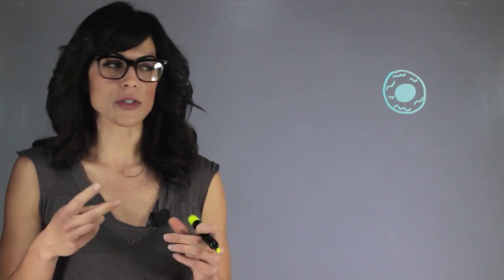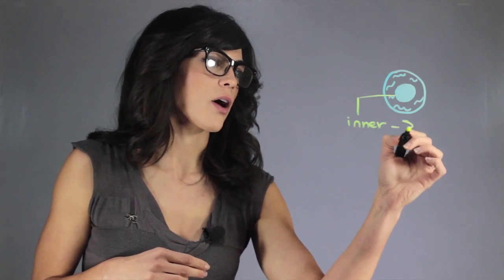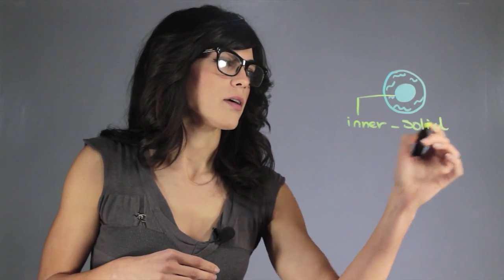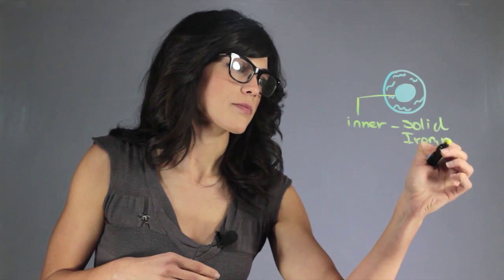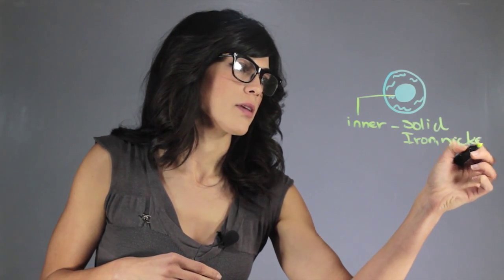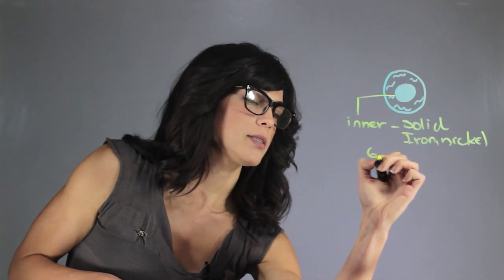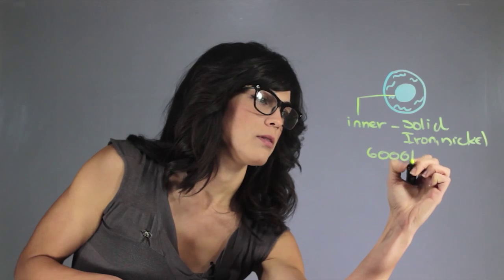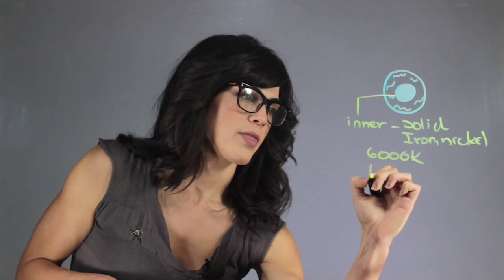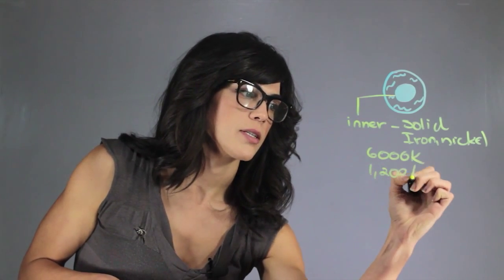Earth's core has two sections and the first section is the inner core. This is solid and it's made out of iron and nickel and it's actually about 6,000 degrees Kelvin and about 1,200 kilometers in size.